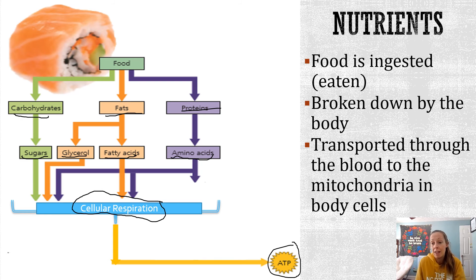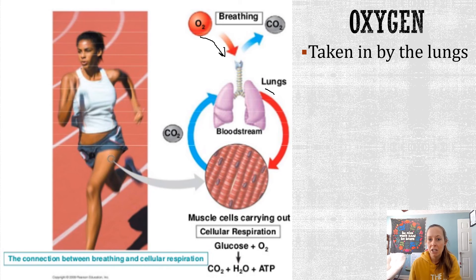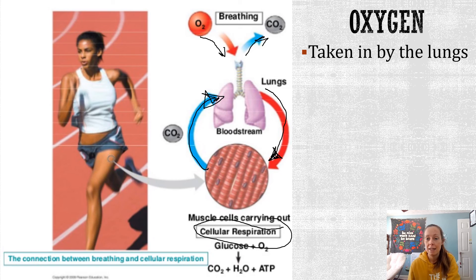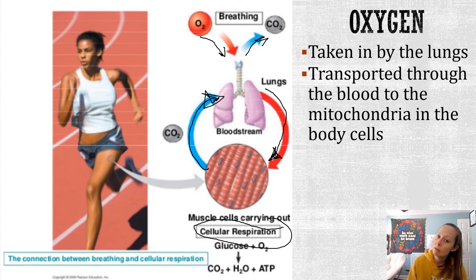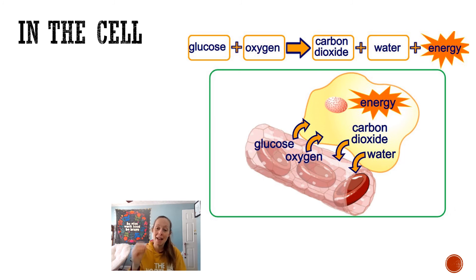The point of all of this is to make ATP, because if we don't have it, our bodies can't run. Oxygen goes into the lungs, gets dropped off into the blood and brought to the muscles, and in the muscle cells we do cellular respiration and get our ATP. Carbon dioxide is the waste product — it's given back to the lungs via the blood and exhaled. Oxygen is transported to the mitochondria in the body cells, and the mitochondria make ATP with it. The excess CO2 is transported back through the blood and exhaled.